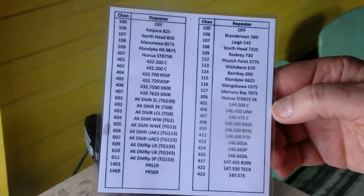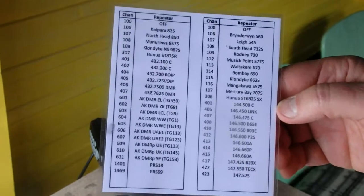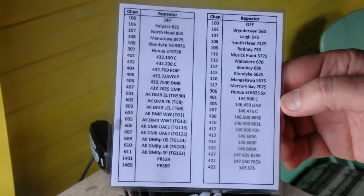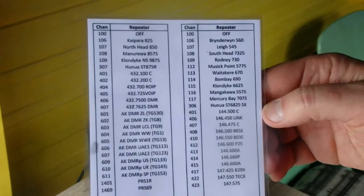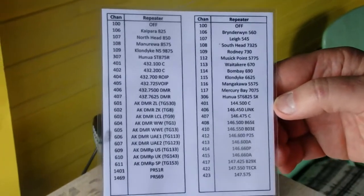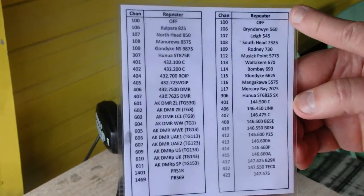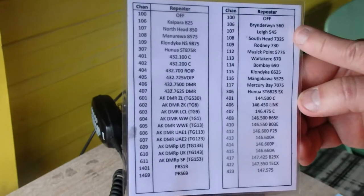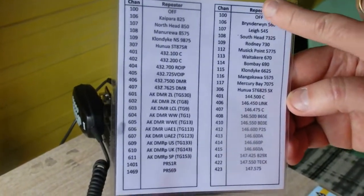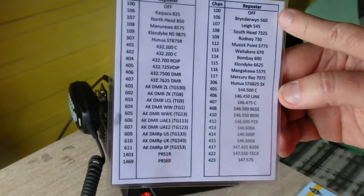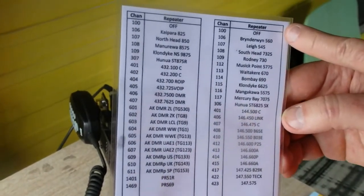So this here is the cheat sheet for the way that the channels are programmed into the radios. The channel ID, which we'll get to in a second, is down the left-hand side. The repeater name and the frequency is down the right-hand side, and these names are what shows up on the radio screen.